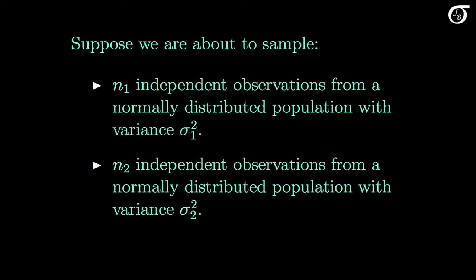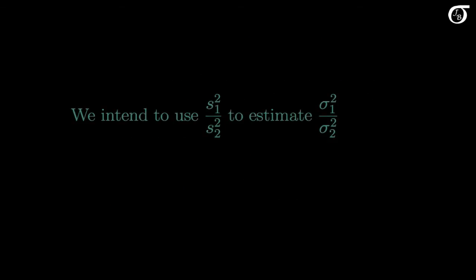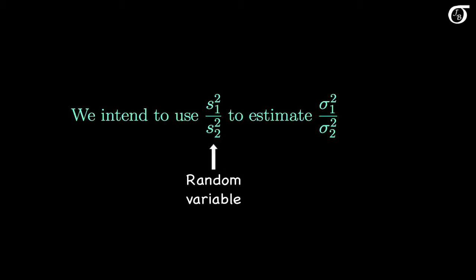Suppose we are about to sample n1 independent observations from a normally distributed population that has a variance of sigma 1 squared, and n2 independent observations from a normally distributed population that has a variance of sigma 2 squared, and suppose these two samples are independent. We intend to use the ratio of sample variances s1 squared over s2 squared to estimate the ratio of population variances sigma 1 squared over sigma 2 squared. The ratio of sample variances is a random variable that will eventually take on a value once we draw the samples, and the ratio of population variances is a fixed unknown quantity that we are trying to estimate.